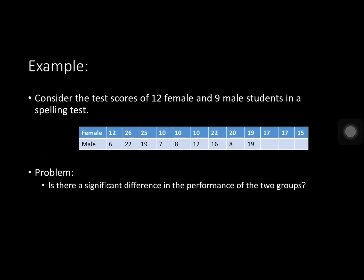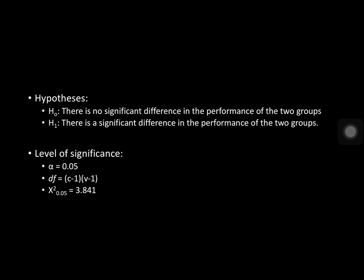For our example problem, consider the test scores of 12 female and 9 male students in a spelling test. The problem statement asks: is there a significant difference in the performance of the two groups? The null hypothesis states there is no significant difference in the performance of the two groups. The alternate hypothesis states there is a significant difference. We will test this at alpha equal to 0.05.